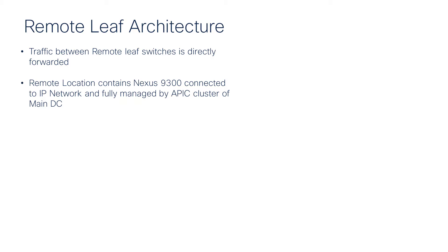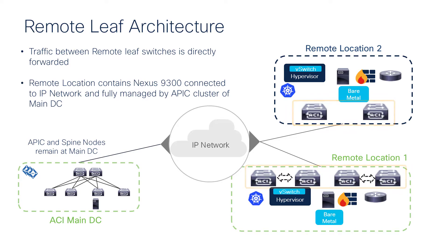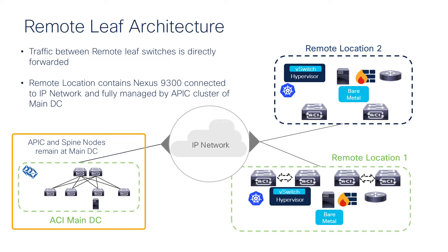Before we go and do a deep dive about what this new feature is, let's take a look at the architecture of remote leaf. As part of this solution, what you do is you put a pair of remote leaf at a remote location, and those remote leaf are completely discovered, managed, and operated from a central location — and that's where your APIC controller and spines are located.